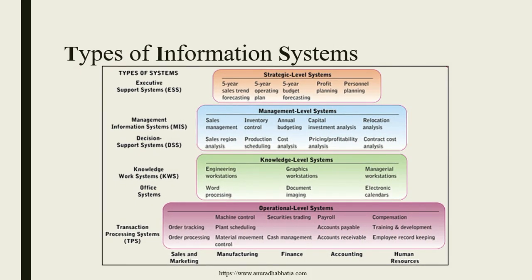This is another way of representing the types of information systems. At the bottom level, the operational level contributes to the Transaction Processing System. The knowledge level contributes to knowledge work systems and office systems. Management level systems are MIS and the Decision Support System. The strategic level — where they design five-year plans, profit planning, and scheduling — is the Executive Support System, or ESS. This is the basic functionality of the types of information systems.